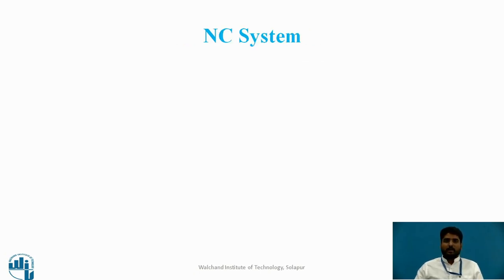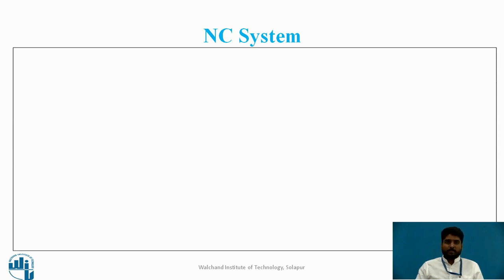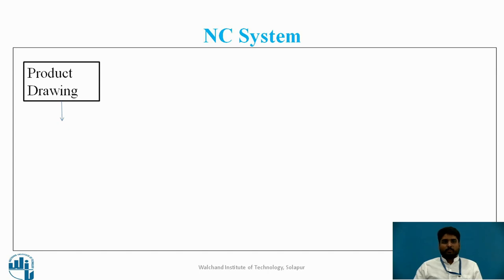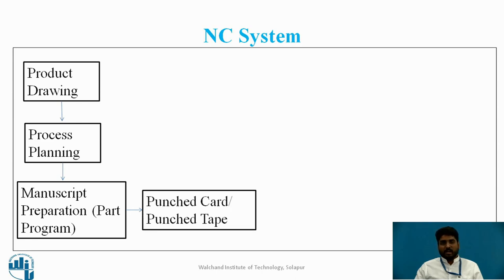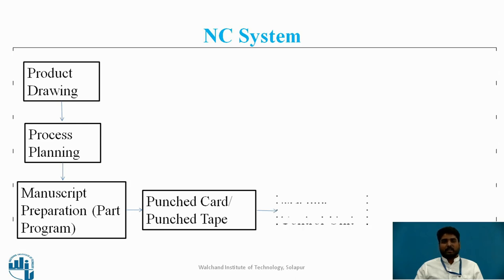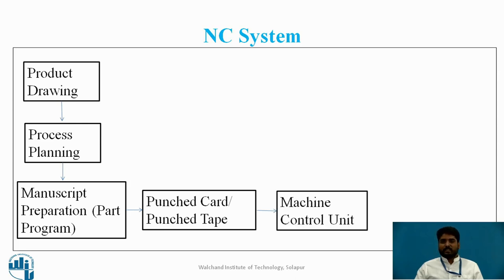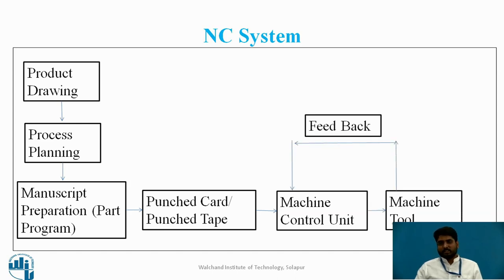You will see the layout of the NC system. We get a product drawing; according to the product drawing, we do process planning. In process planning, we go for manuscript preparation, also called the part program. According to the manuscript or part program, we create punched cards or punched tapes, which are sent as signals to the machine control unit, which then runs the machine tool.